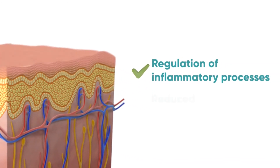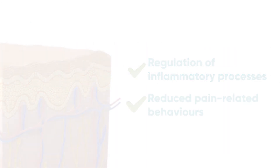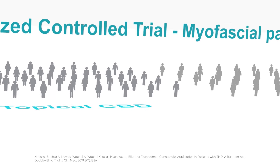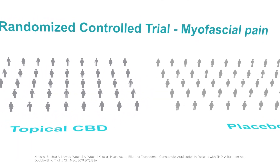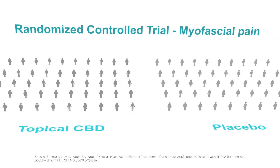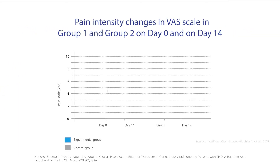Regulation of inflammatory processes and reduced pain-related behaviors were demonstrated in animal models. The trial by Niteka Bukta et al. in human patients demonstrated that topical CBD is effective for pain relief in myofascial pain. A significant reduction of 70.2% in pain intensity was observed in the experimental group, compared with only 9.81% pain relief in the placebo group.